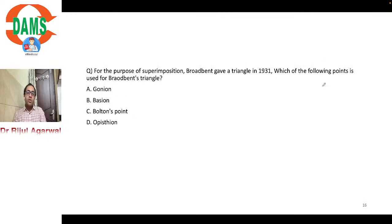For the purpose of superimposition, Broadbent gave a triangle in 1931. Which of the following points is used for Broadbent's triangle?